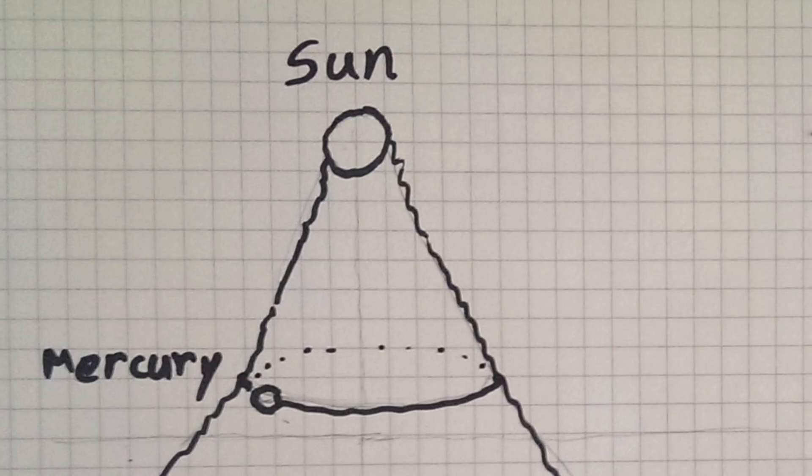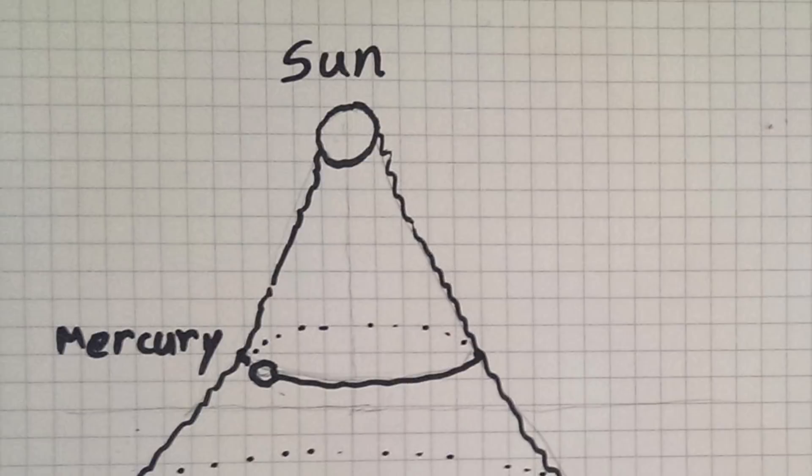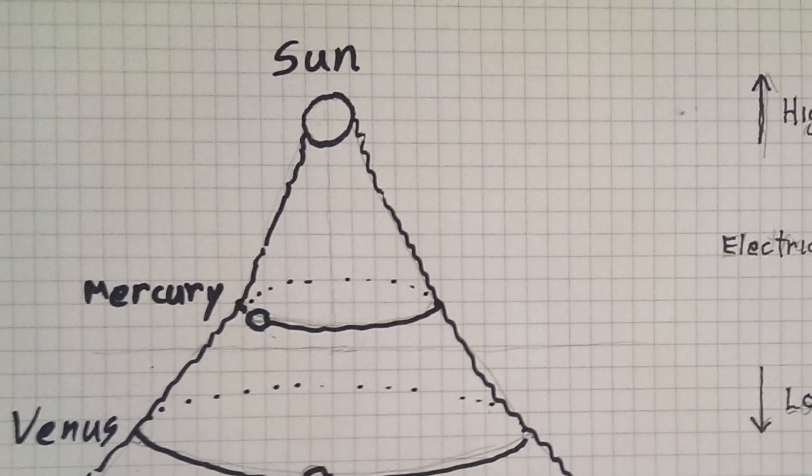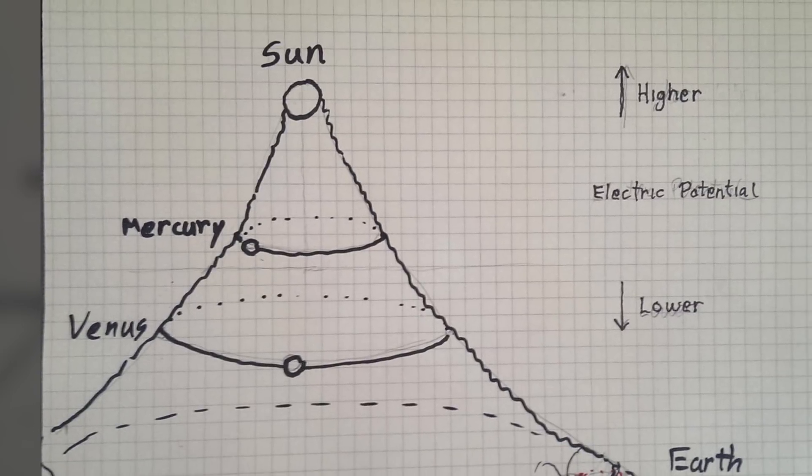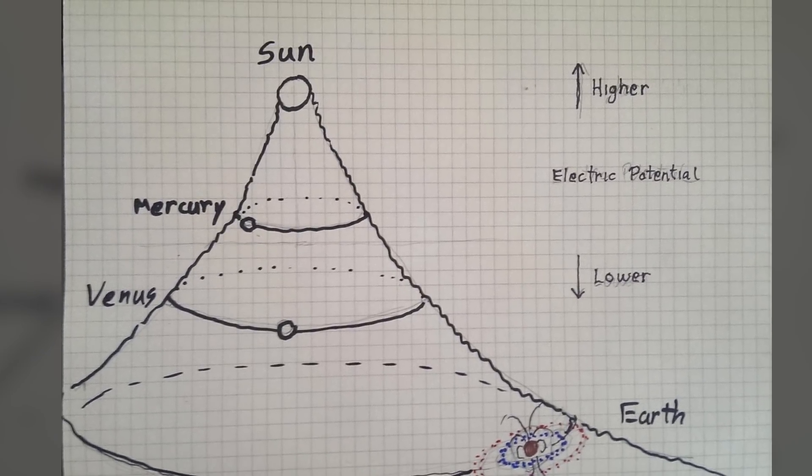The sun is the highest electrical activity in our system, the highest electrical potential. All planets in our system live within the electrical body of the sun. As we move out from the sun, the electrical potential decreases. Mercury is at a higher electrical potential than Venus. Venus is at a higher electrical potential than the earth.